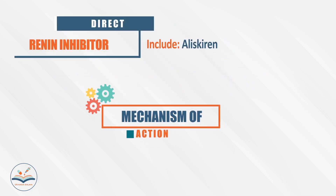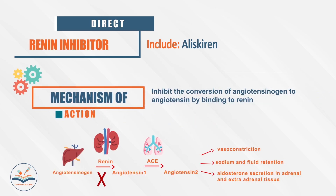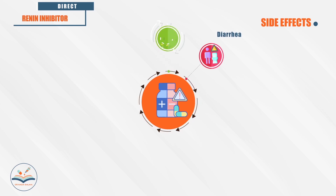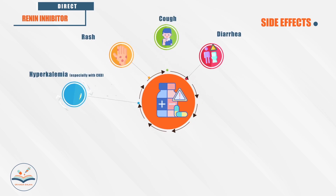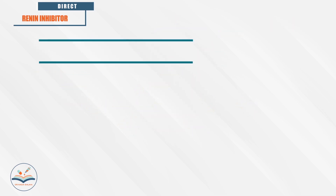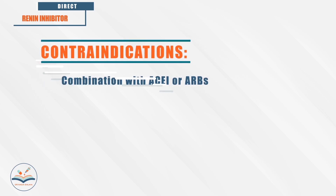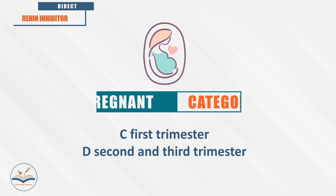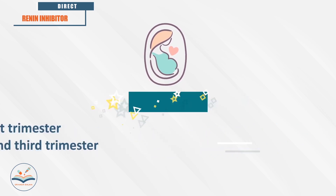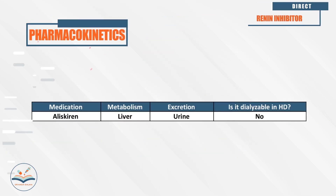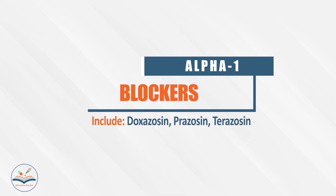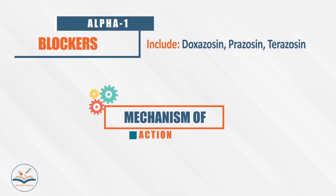Direct renin inhibitors, which include aliskiren, directly inhibit the renin enzyme, inhibiting conversion of angiotensinogen to angiotensin. Side effects may include diarrhea, cough, rash, and hyperkalemia. It is category C during the first trimester and category D in the second and third trimesters. It is metabolized by the liver, excreted by the kidneys, and is not dialyzable.